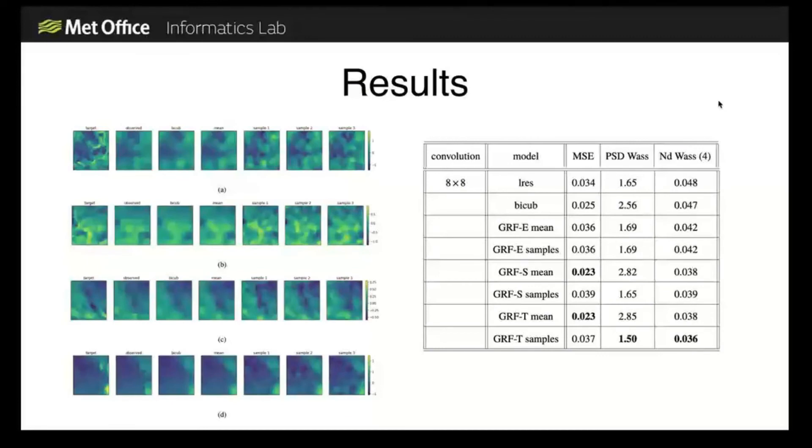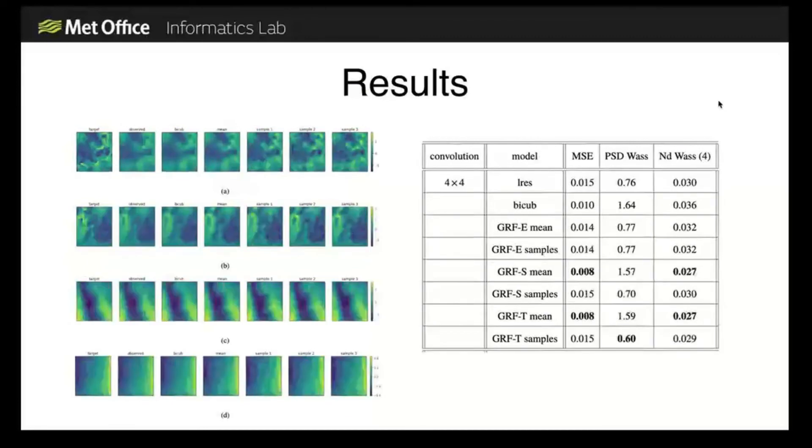The results are actually less good, perhaps surprisingly, for the 4x4 case. The model still performs pretty well overall, but particularly in the neighborhood score, the samples seem to be underperforming. I think part of the reason for this is that this model assumes spatial stationarity of the field - essentially having the same length scale everywhere to describe the whole field.